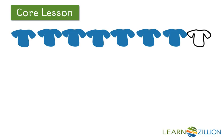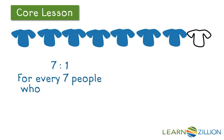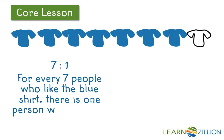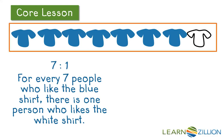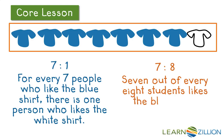Let's start with ratios that deal in relationship to the blue shirts. The first one I see is that there are seven blue shirts for every one white shirt, meaning for every seven people who like the blue shirt, there's only one person who likes the white shirt. That's a part-to-part ratio, but I also see a part-to-total ratio. Remember there are eight shirts total in this group, so our part-to-total ratio would be seven to eight, meaning seven out of every eight students likes the blue shirt. Notice in each case, the language helps us identify what type of ratio we're talking about. The part-to-part has the key phrase 'for every there is,' while the part-to-total has the key phrase 'out of every.'